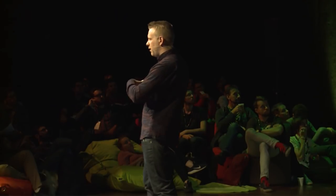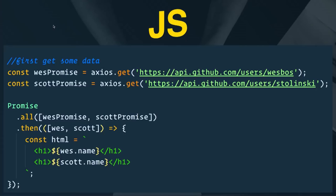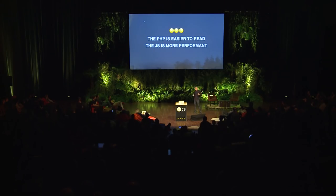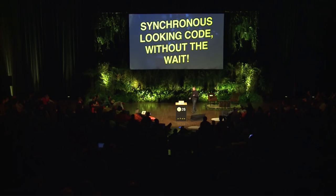In JavaScript we can put both of those promises into variables, fire them off at the same time, and wait until both come back, then use the data to create some HTML and display it on the page. PHP is easier to read but JavaScript is more performant because we're not waiting on unnecessary things to finish. Async/await gives us synchronous-looking code without the downside of actually writing synchronous code.